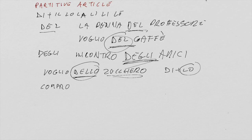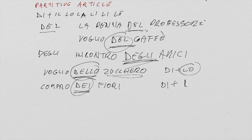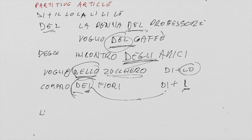Or: 'compro dei fiori' — I buy some flowers. Why is 'some' expressed by 'dei' here? Because you have DI plus I. Fiori is plural, and the correct article in front of fiori is I, so when you combine I and DI the result is 'dei.'